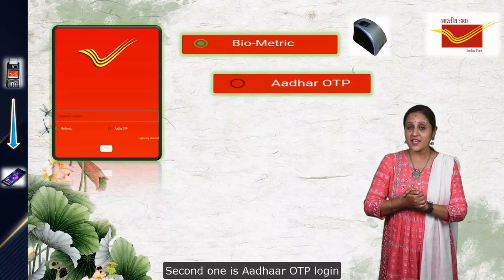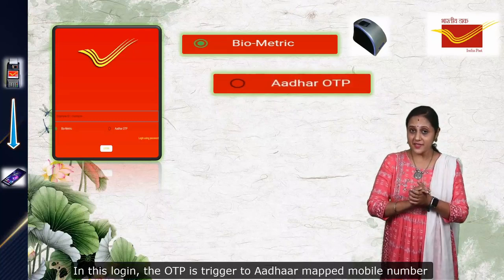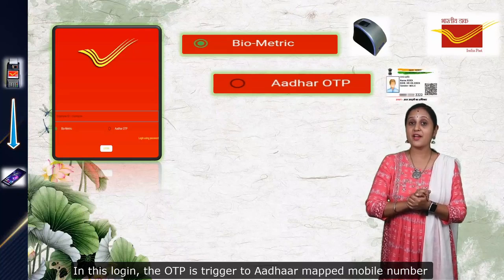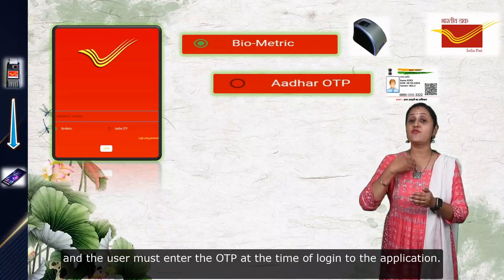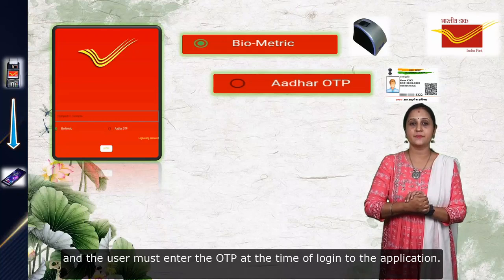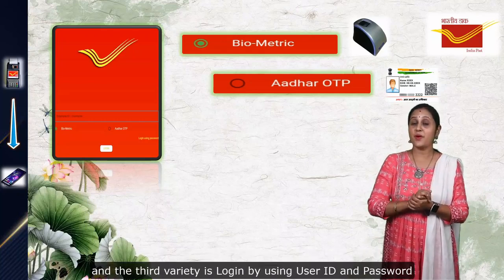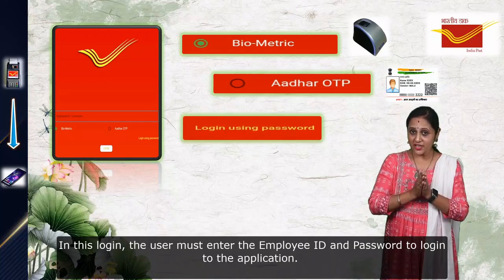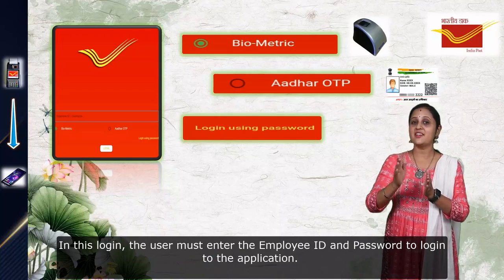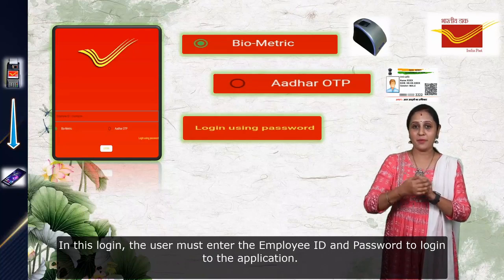The second one is Aadhaar OTP login. In this, the OTP is triggered to the Aadhaar-mapped mobile number and the user must enter the OTP at the time of logging into the application. The third type is login by using user ID and password, where the user must enter the employee ID and password to login to the application.